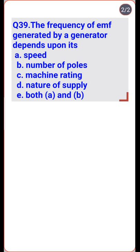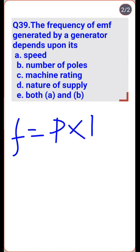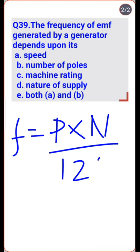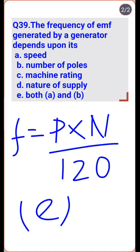The frequency of EMF generated by a generator depends on F = PN/120 — so option A is the right one: speed and number of poles.